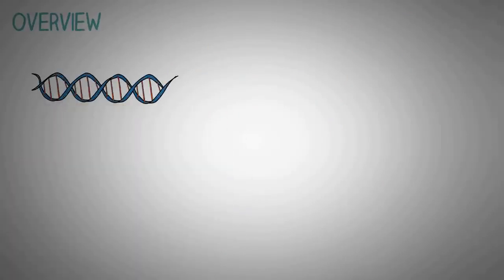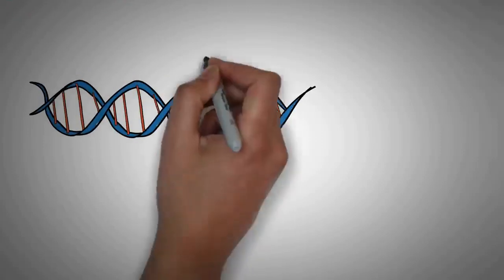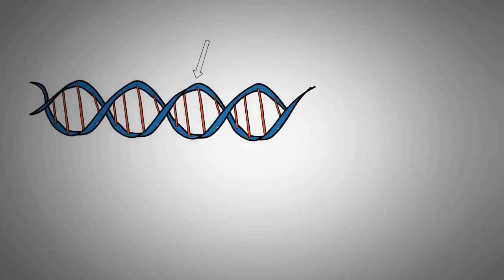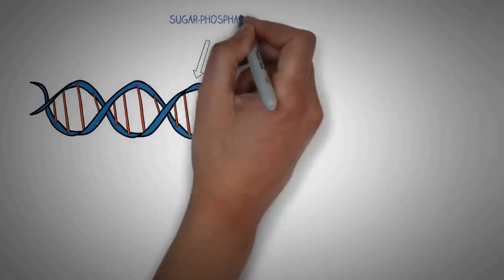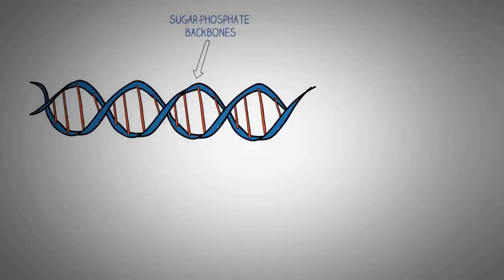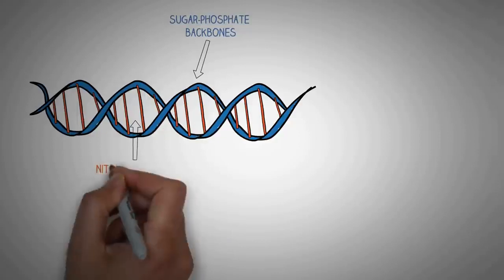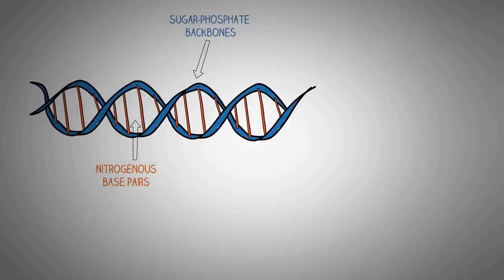What you see here is the simple double helix model of the DNA. In this model, the two blue lines represent the sugar-phosphate backbones of the DNA, and at the center the orange lines represent the nitrogenous base pairs of the DNA.